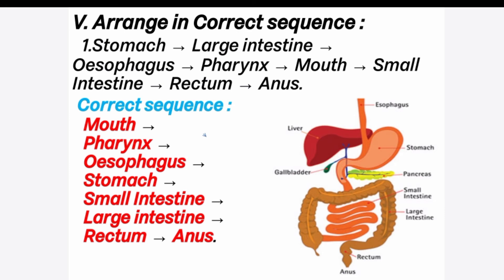Arrange in correct sequence for the digestive system: mouth, esophagus, stomach, small intestine, large intestine, rectum, and finally the anus. The anus helps to expel waste products through this opening.